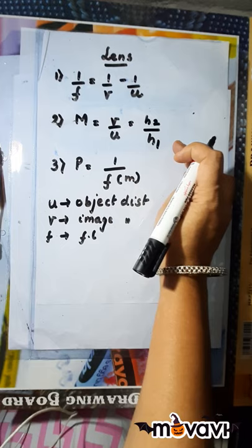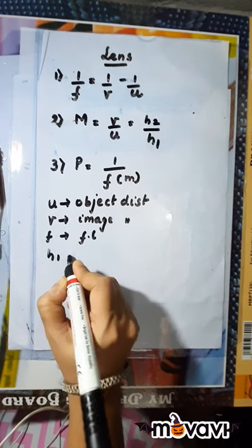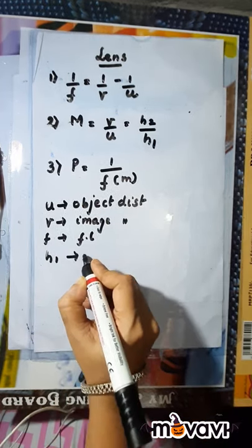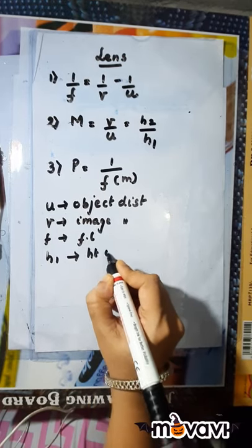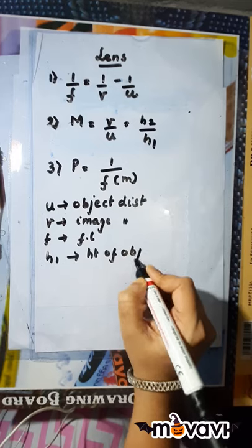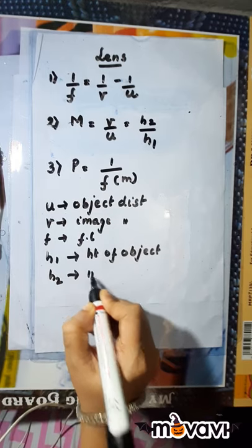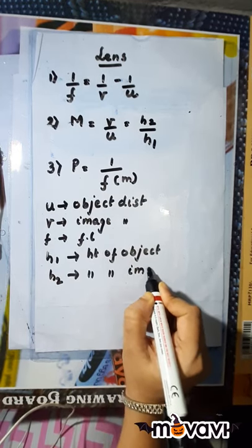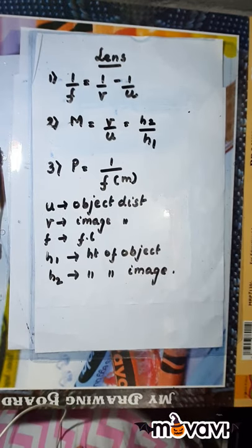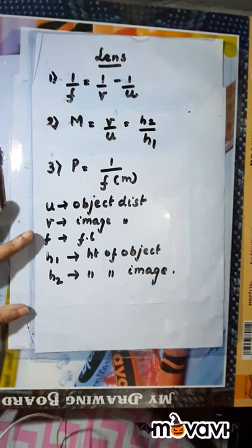Whether it is a concave lens or a convex lens. For magnification, M equals V upon U, which is equal to H2 upon H1, where H1 is the height of the object and H2 is the height of the image. Now, what is very, very important where this chapter is concerned are the sign conventions.